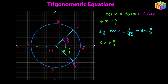If we rotate OP one full circle in the counterclockwise direction, that angle would be 2pi plus pi over 4. If we rotate it one more full circle counterclockwise, the angle would be 4pi plus pi over 4. Similarly, rotating one more time counterclockwise gives 6pi plus pi over 4.